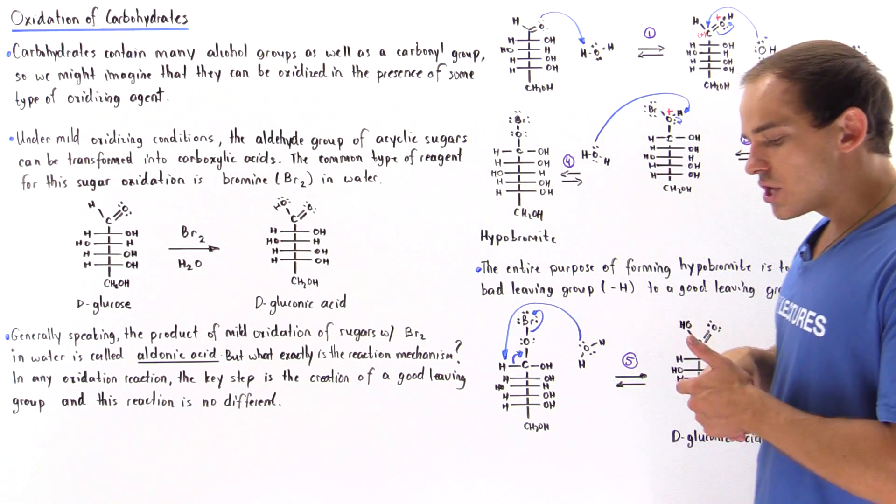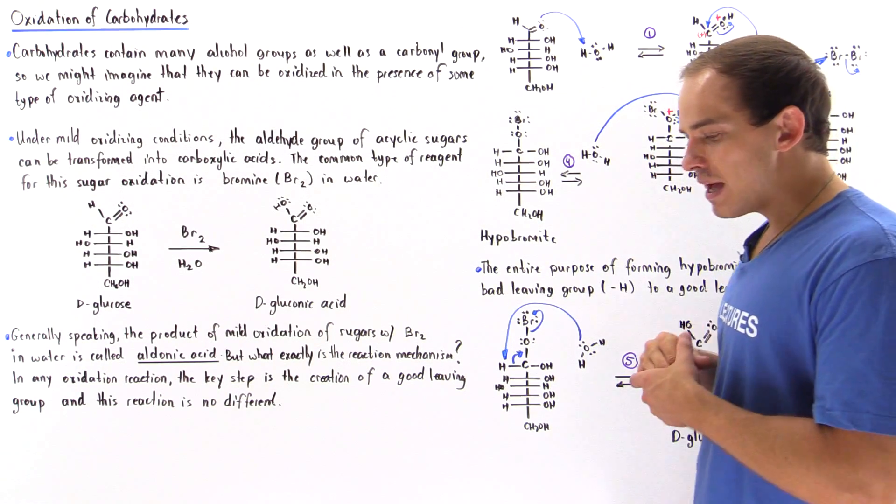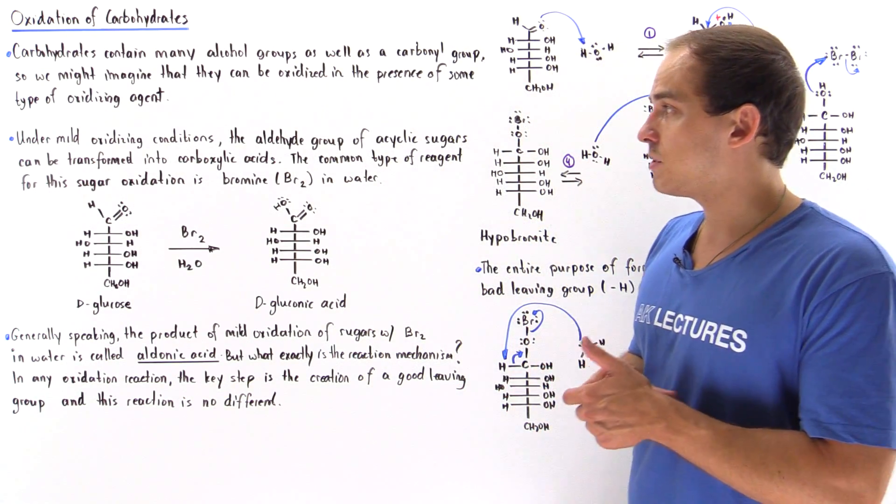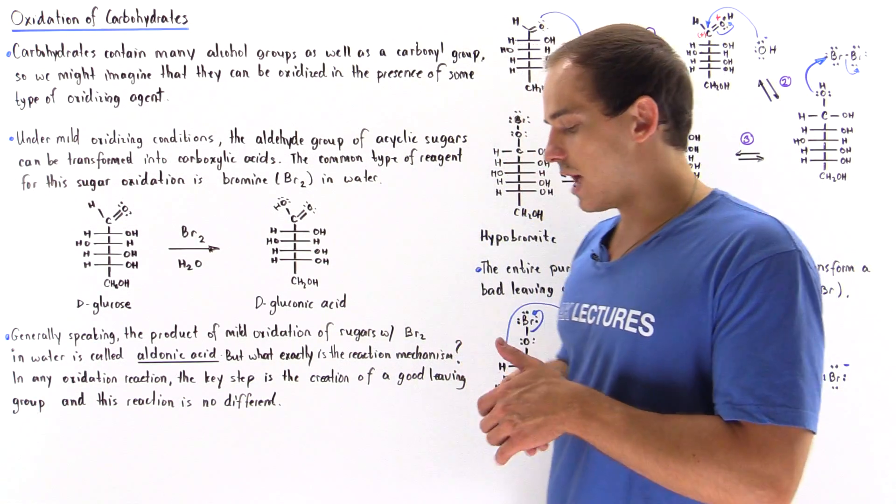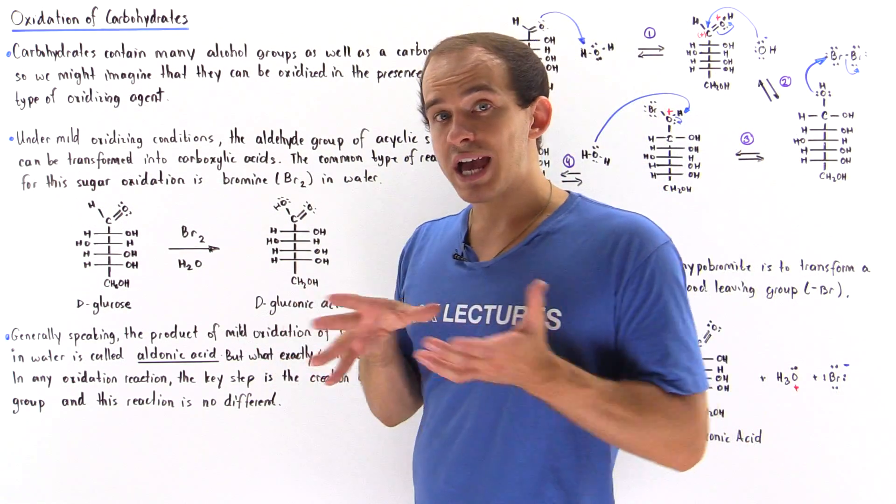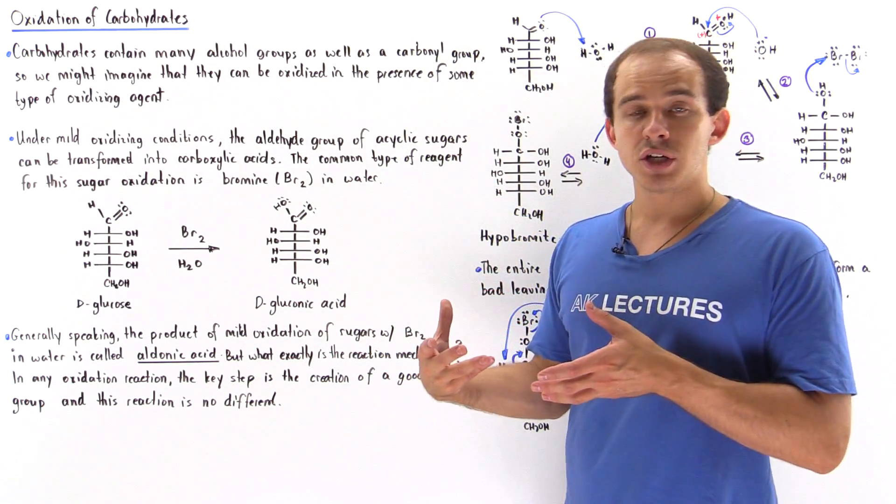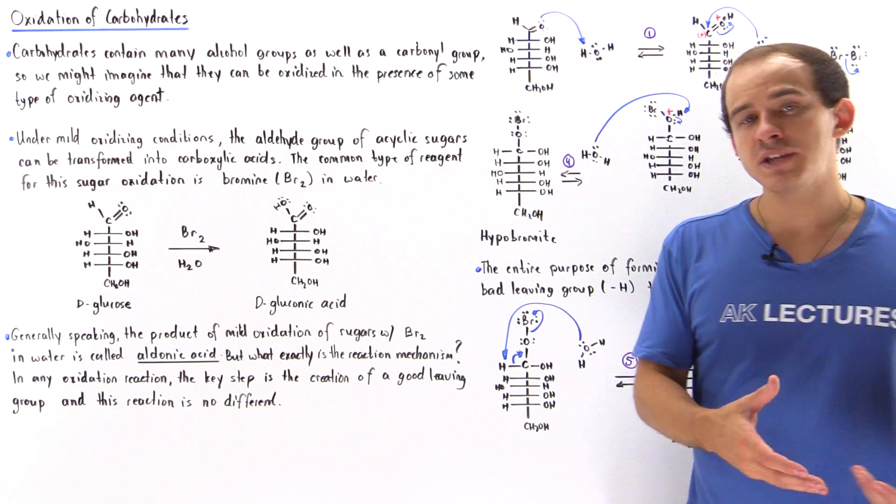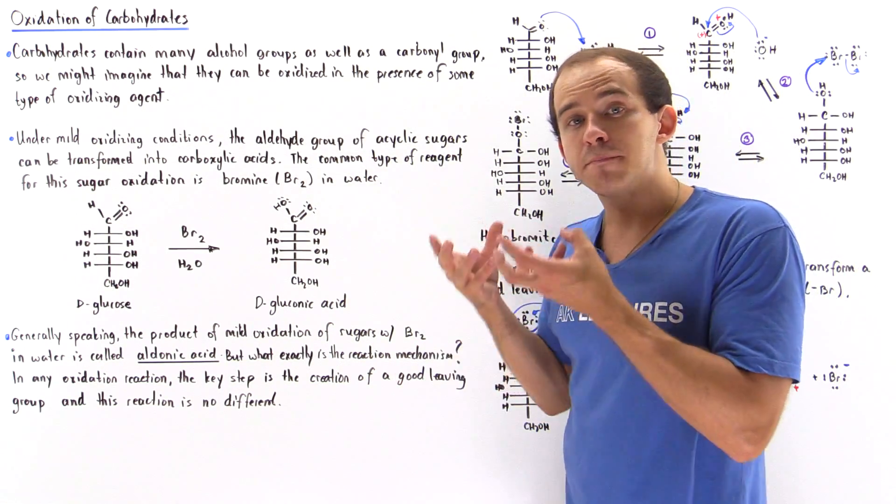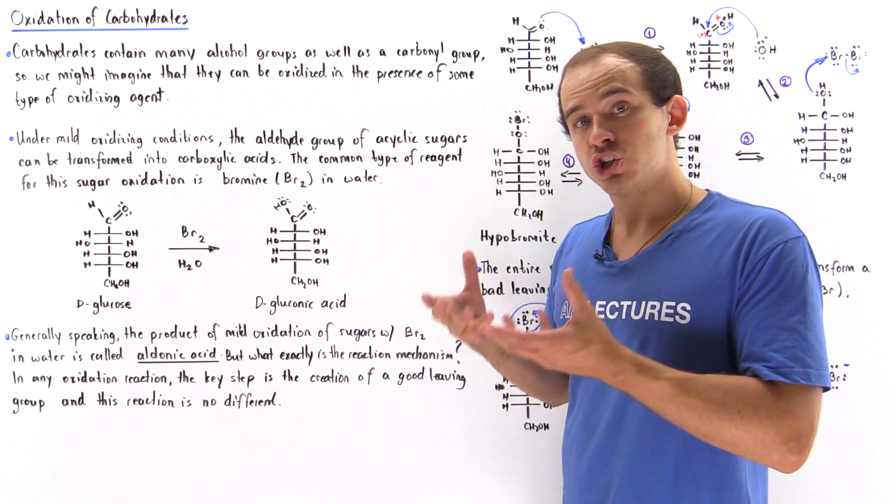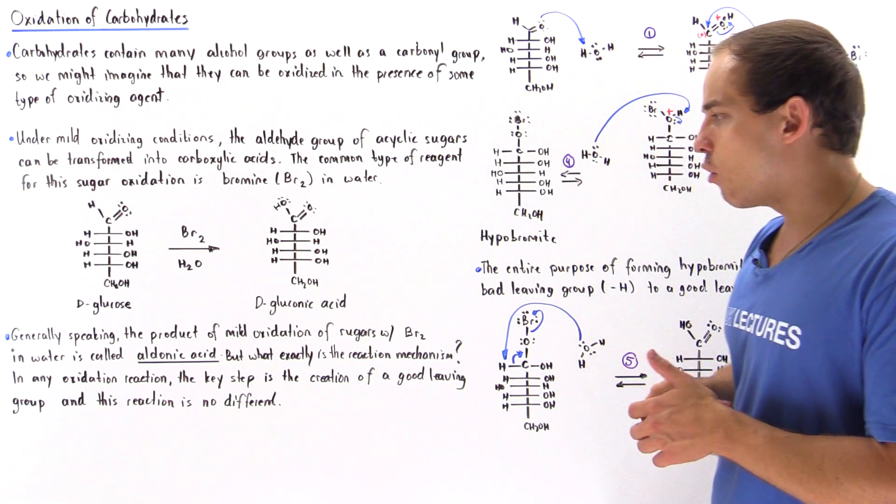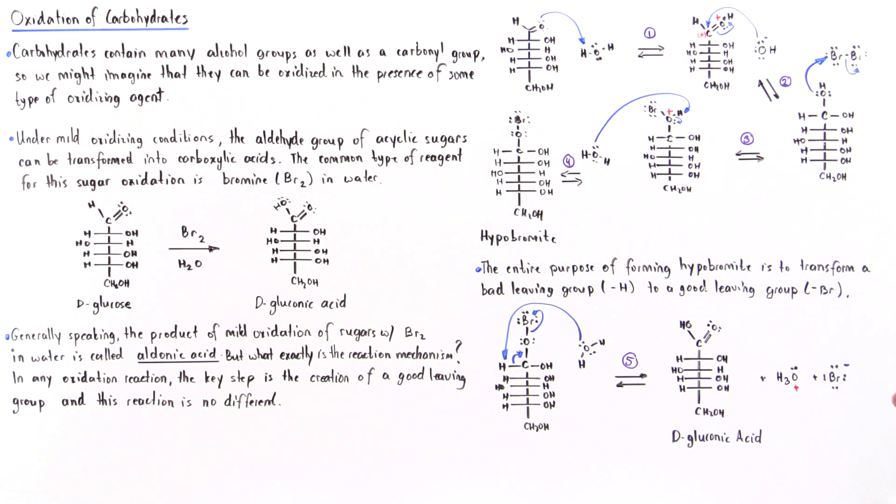Now the question is, what exactly is the reaction mechanism by which this oxidation reaction takes place under mild oxidizing conditions? Basically, as in most oxidation reactions, we have the transformation of a poor leaving group into a good leaving group, and this reaction is no different. The main purpose is to create a good leaving group so that our carboxylic acid group can actually form.